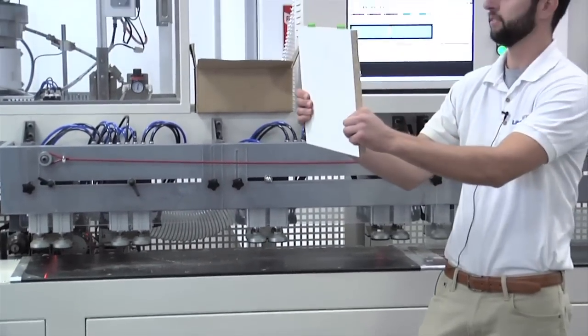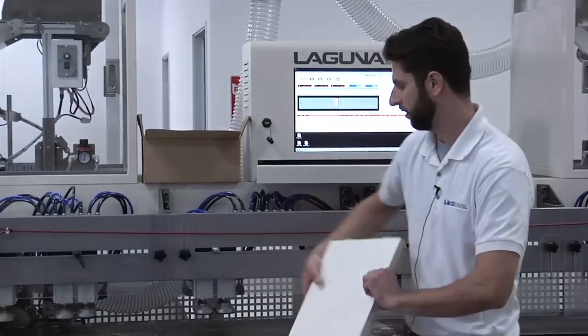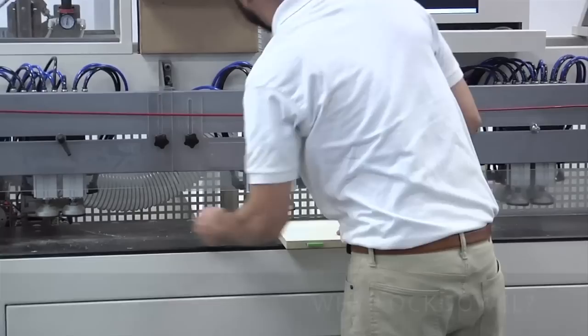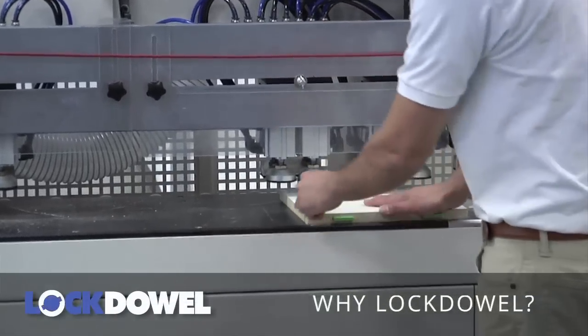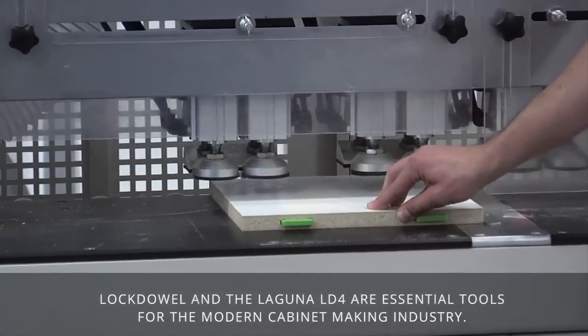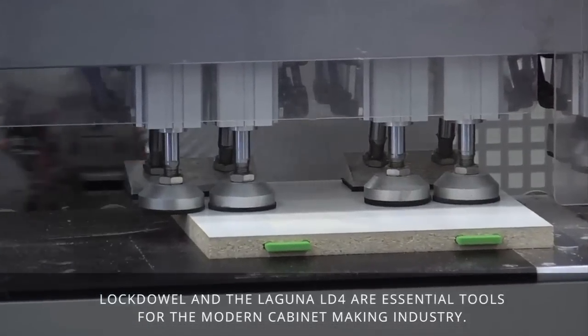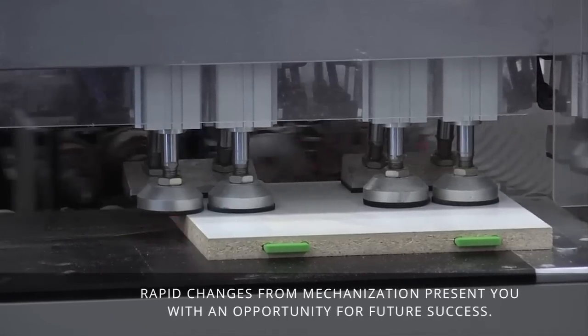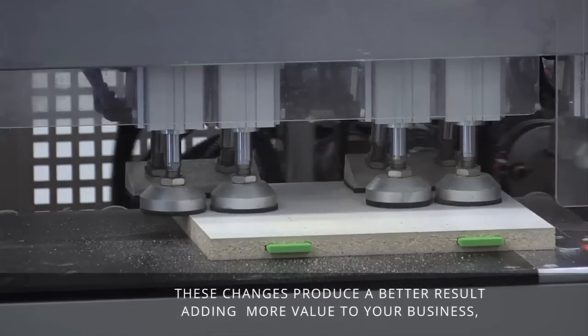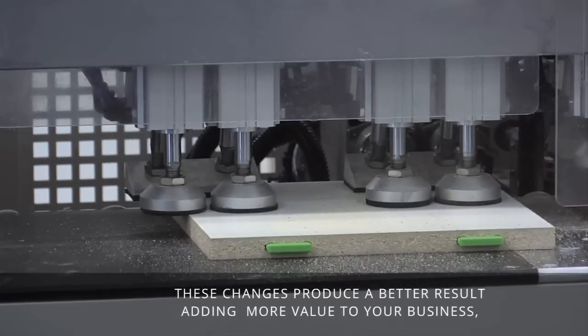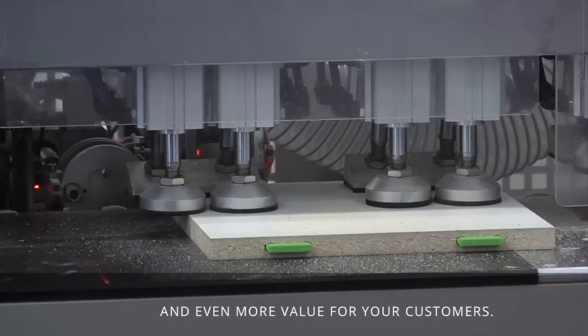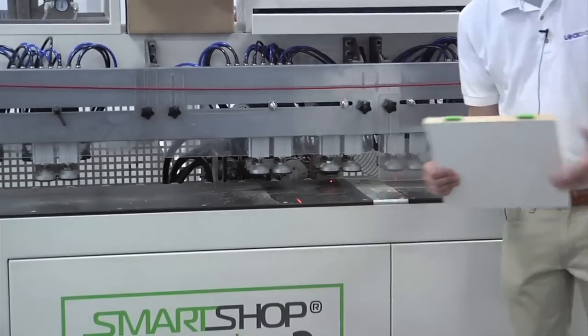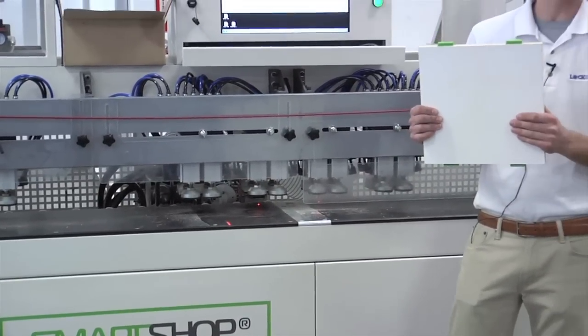So you can see there, flip it around, do the mirrored side. Make sure your clamp's in the correct position. And now this part is ready to be installed on your cabinet. It's as easy as that.